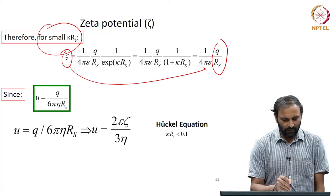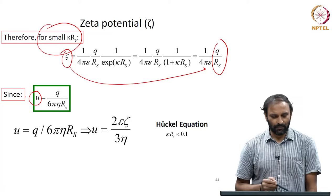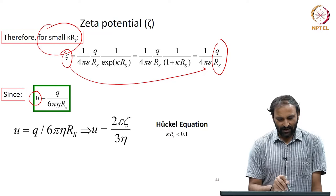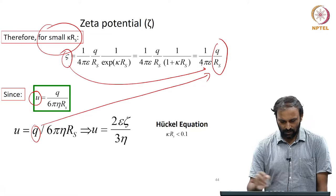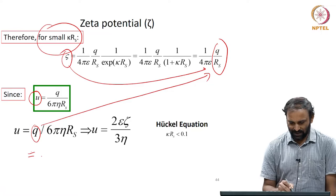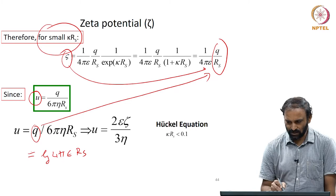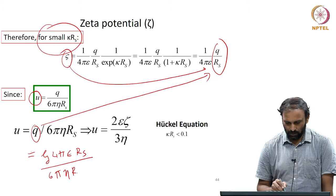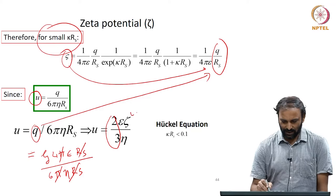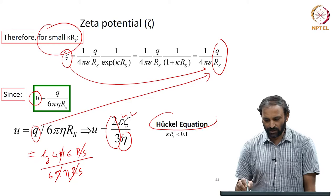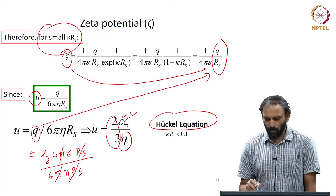For small κRs, using the linearized Poisson-Boltzmann equation for the spherical particle system, the zeta potential is given by ζ = q/(4πε·Rs). For the isolated particle moving in an electric field, U = q/(6πη·Rs). Substituting q = 4πε·Rs·ζ into the mobility expression and canceling the Rs terms, one obtains U = (2/3)·(εζ/η). This is the Hückel equation, valid when κ·Rs < 0.1.